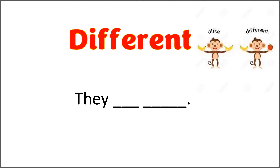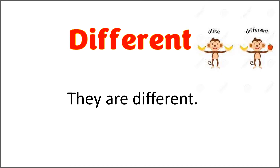The given word is 'different' and the sentence is 'they blank blank.' Look at the picture — the opposite of different is alike. So use the word 'different' with 'are' to complete the given sentence, and the answer is: they are different. Yes, they are — they look different.